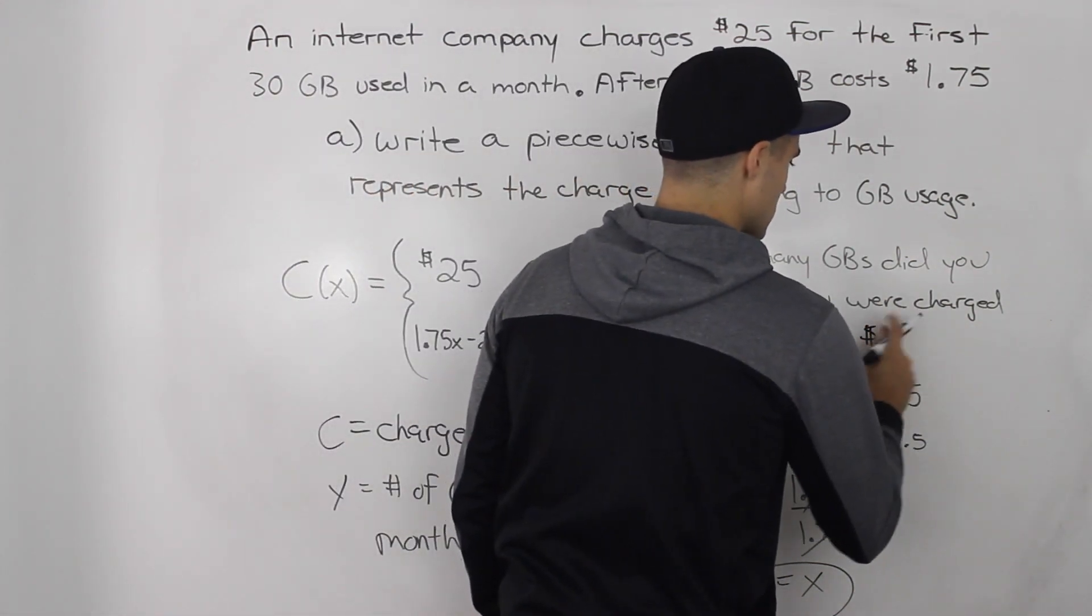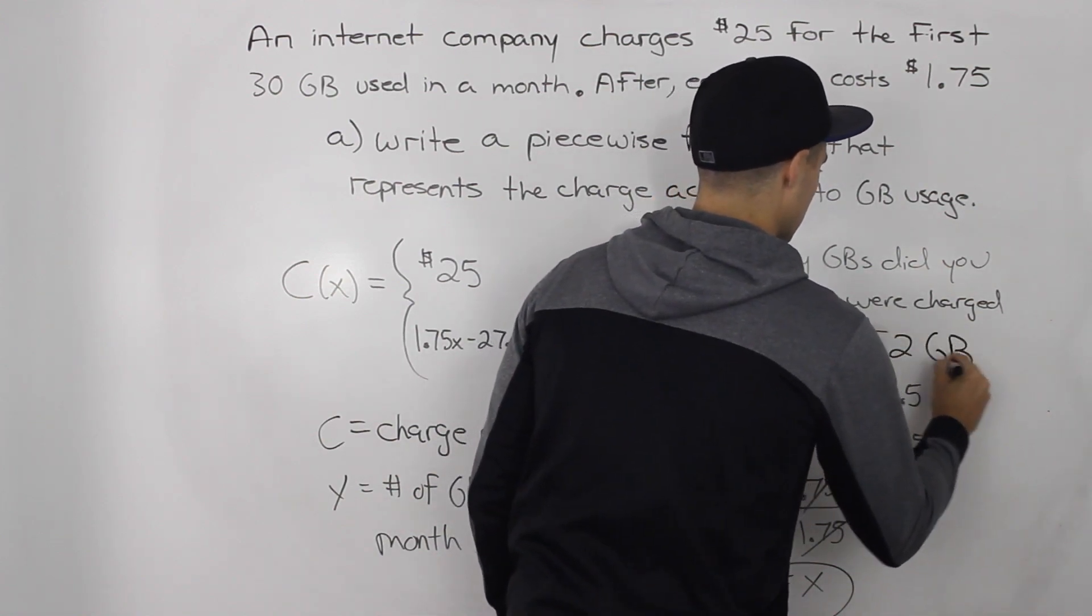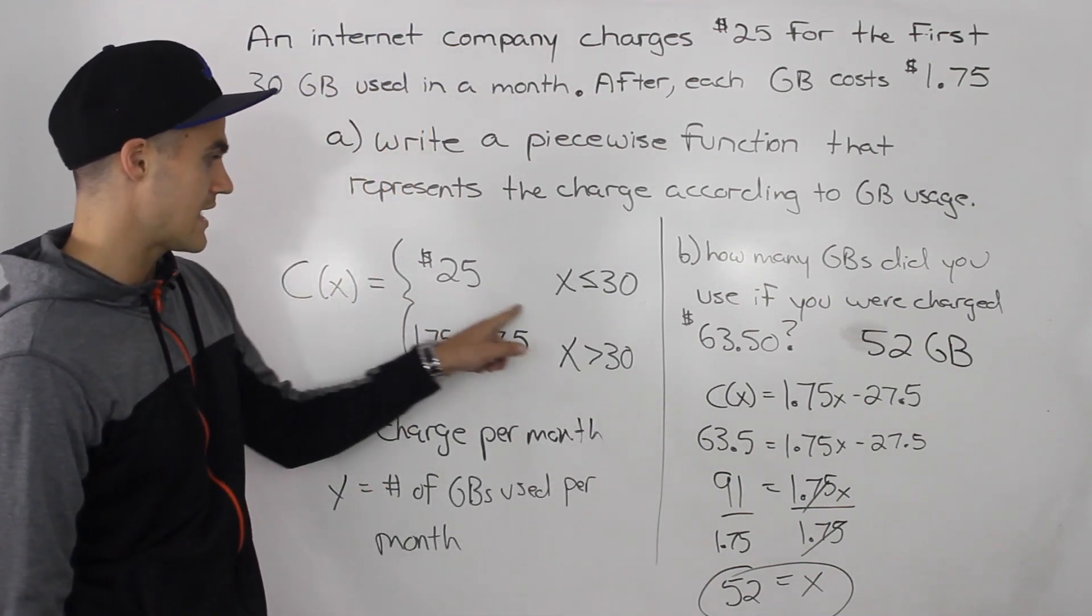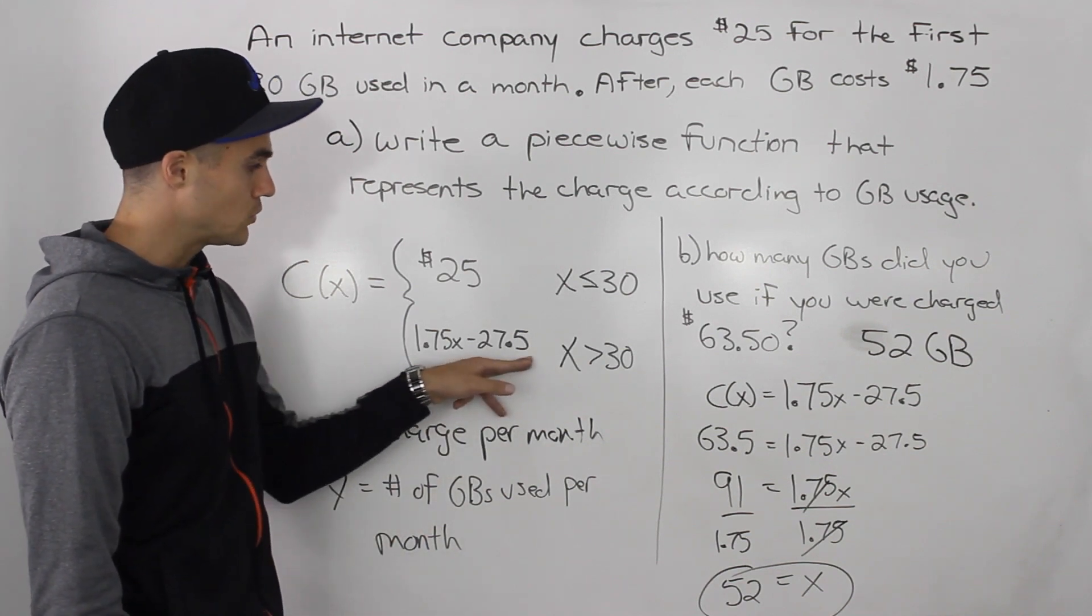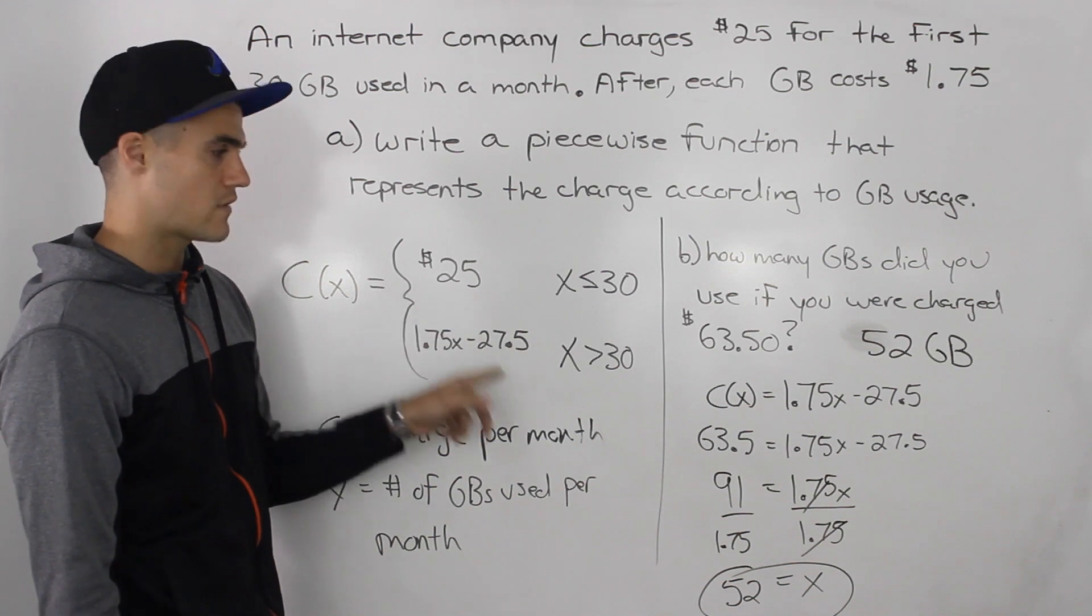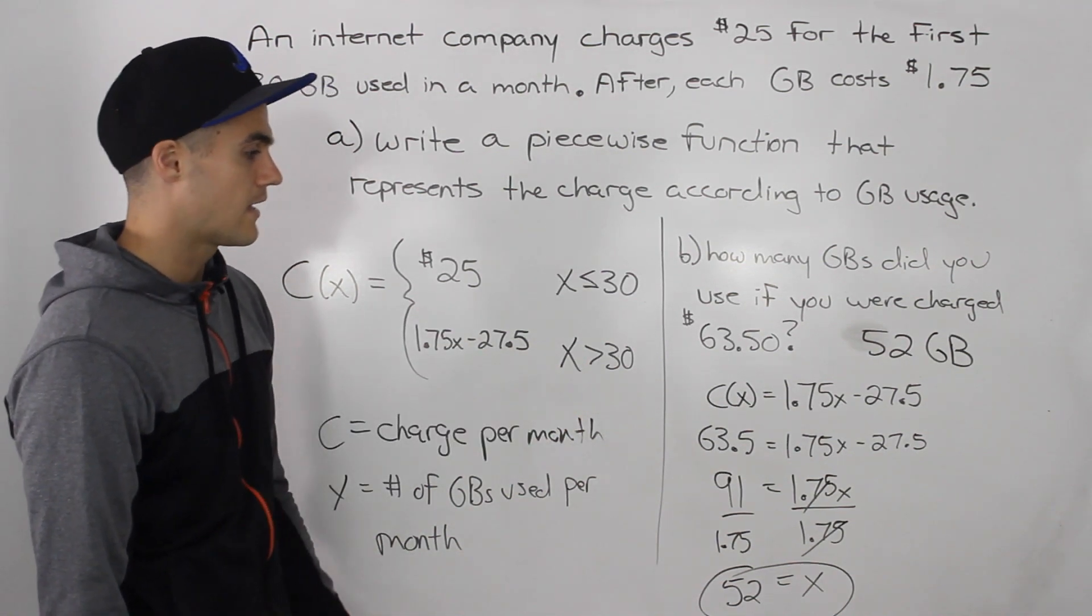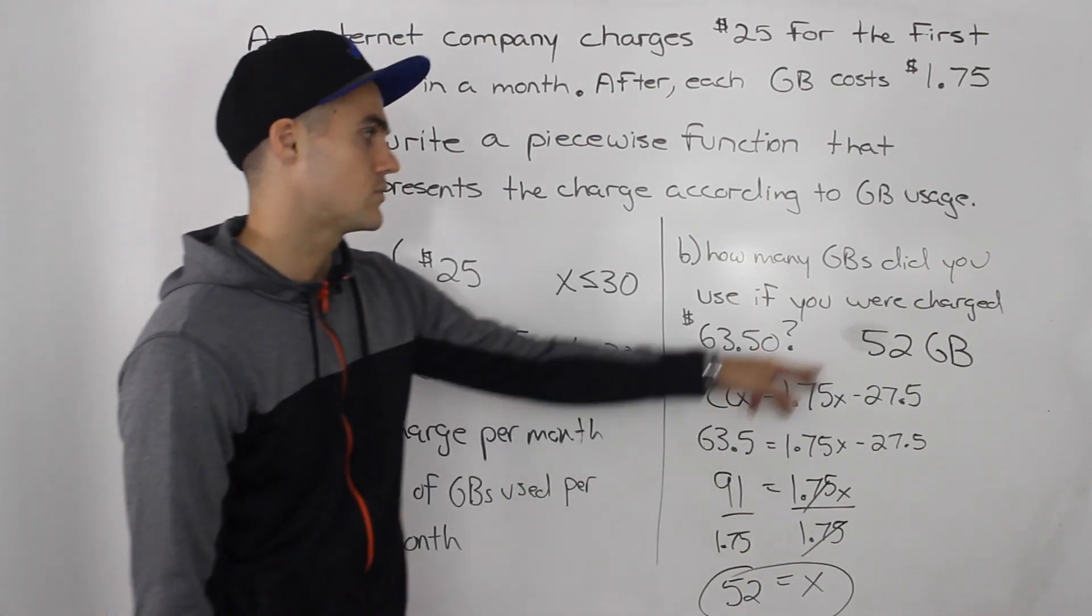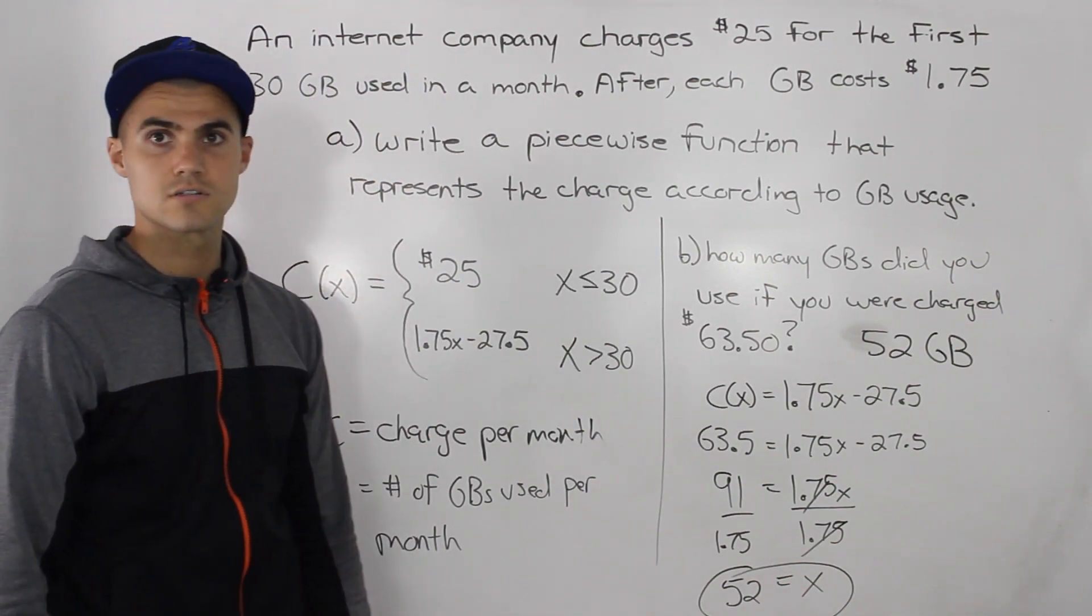So how many gigabytes did you use if you're charged $63.50? Well, we used 52 gigabytes. And we got that by making this leg of the piecewise function equal to 63.5. And we knew we're going to use this leg because 63.5 is a higher charge than 25. So we know we went over 30 gigabytes. And to be more exact, we used 52 gigabytes. And that's the answer to this question.